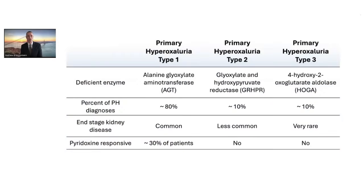To summarize: PH1, PH2, and PH3 all have deficient enzymes. The percent of diagnoses is most common in PH1 compared to PH2 and PH3. End-stage kidney disease is also most common in PH1. About 30% of patients with PH1 will have some responsiveness to vitamin B6 supplementation to reduce urine oxalate levels, but this vitamin has no role in the treatment of PH2 and PH3 patients.